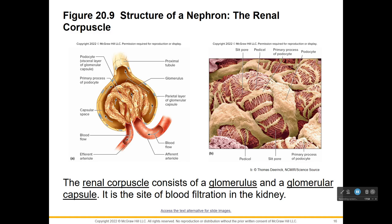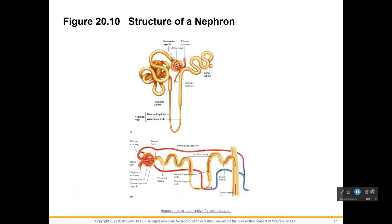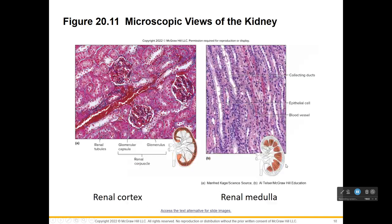Here's what a nephron really looks like: the afferent arteriole coming in, then the efferent. Here's the Bowman's capsule sending filtrate through all the tubules: the proximal tubule, the descending loop of Henle, the ascending loop of Henle, then the distal tubule, which eventually leads to a collecting duct. This picture shows things stretched out a bit and shows how the peritubular capillaries become the efferent arterioles, and as blood continues to flow it will exit the nephron and the kidney altogether.